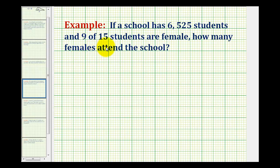When we're told that 9 of 15 students are female, that's a ratio of female students to total students, which can be written as a fraction. So 9/15 of the students are females.